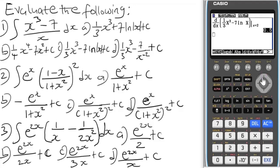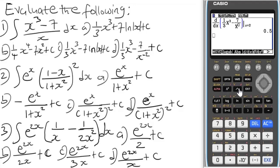Let's also check Option D to confirm. Option D has one-third X-cubed minus 7 over X. Enter that as a fraction with 7 over Alpha X, then close and add the minus. Press EXE — we don't get 0.5, so Option D is incorrect. The answer is confirmed as Option C. Now let's solve Question 2 for more practice.